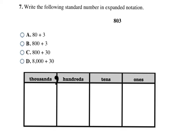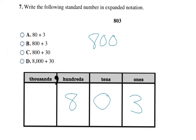Here I'm given eight hundred and three and need to write it in expanded notation. I'll fill it into my chart starting with the ones column and working to the left. I have an eight in the hundreds column — no thousands, so I don't deal with that. Eight in the hundreds means I write eight hundred. There's a zero in the tens column so I don't write anything for tens. And I have three ones, which is just three. So eight hundred and three in expanded form is eight hundred plus three — choice B.